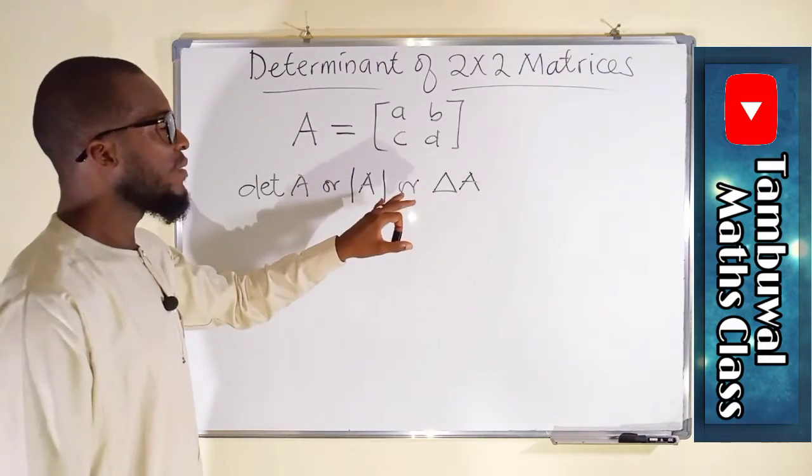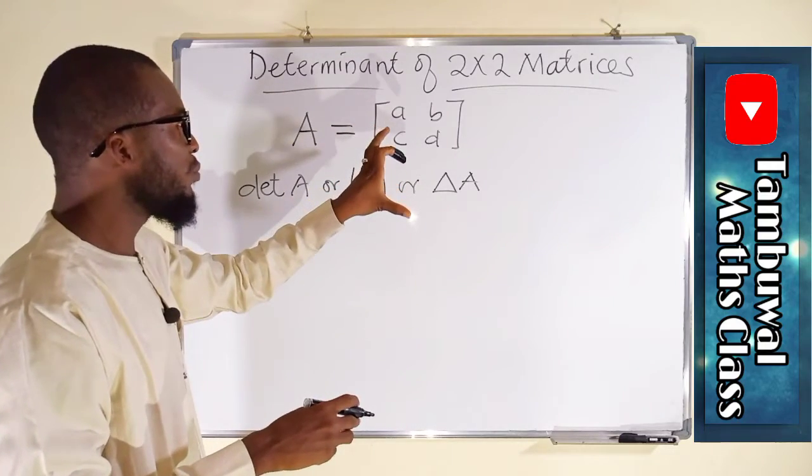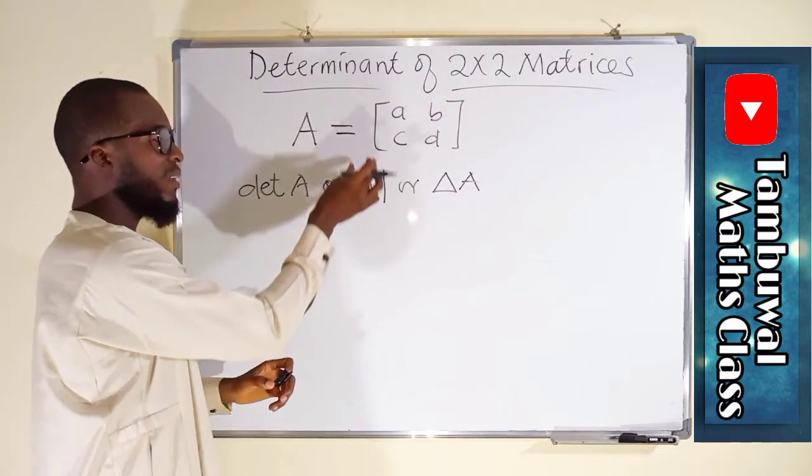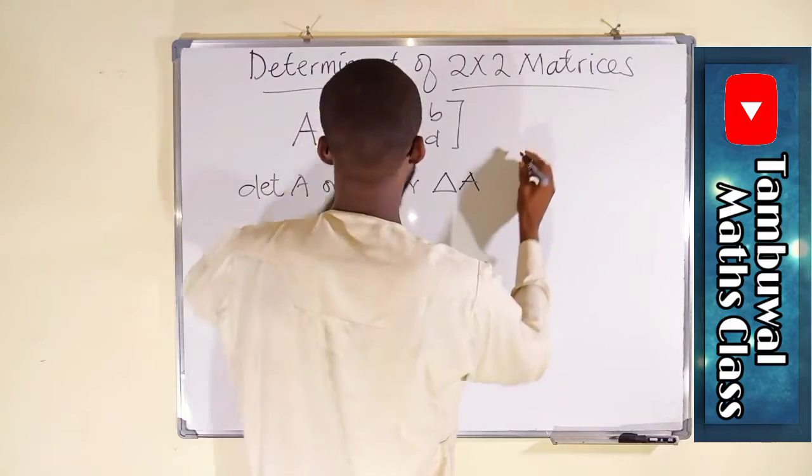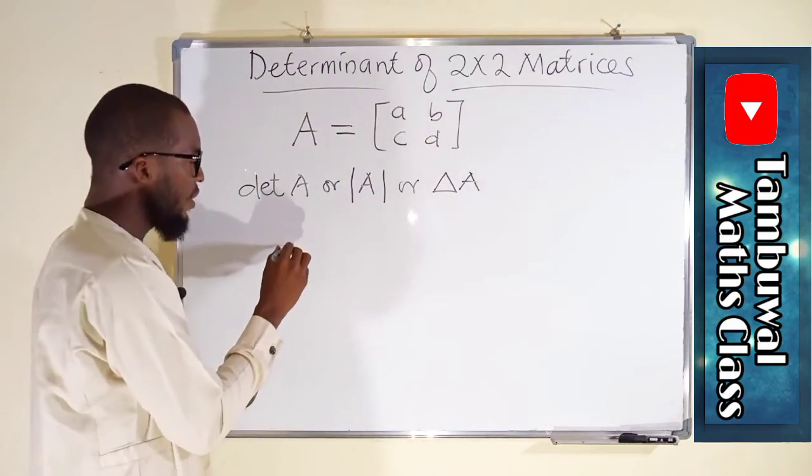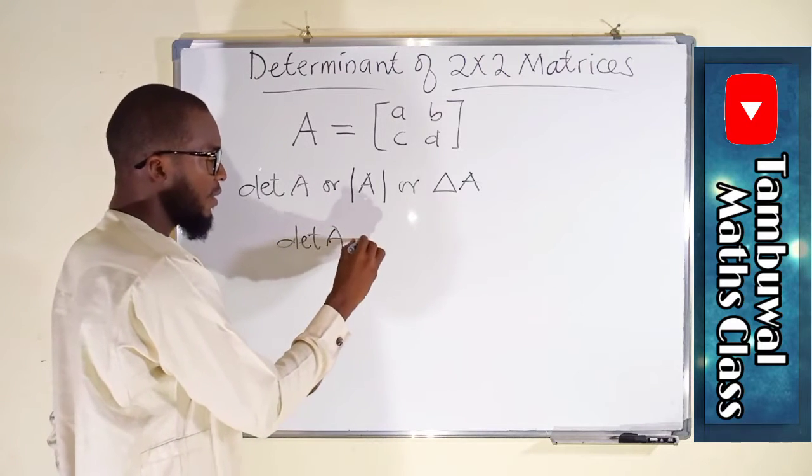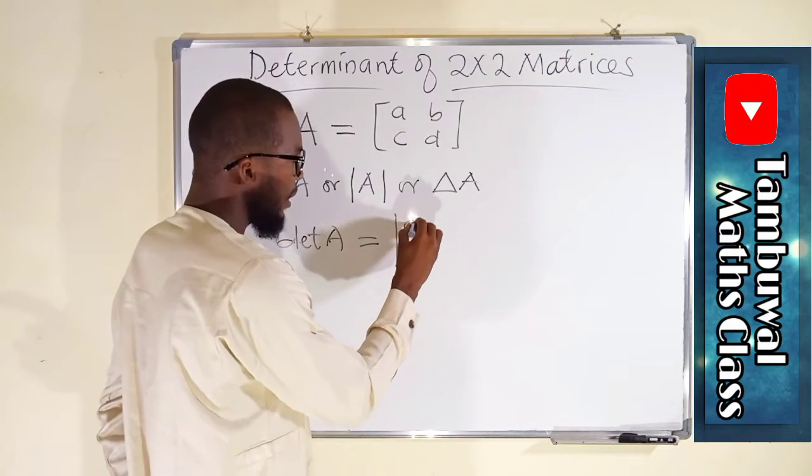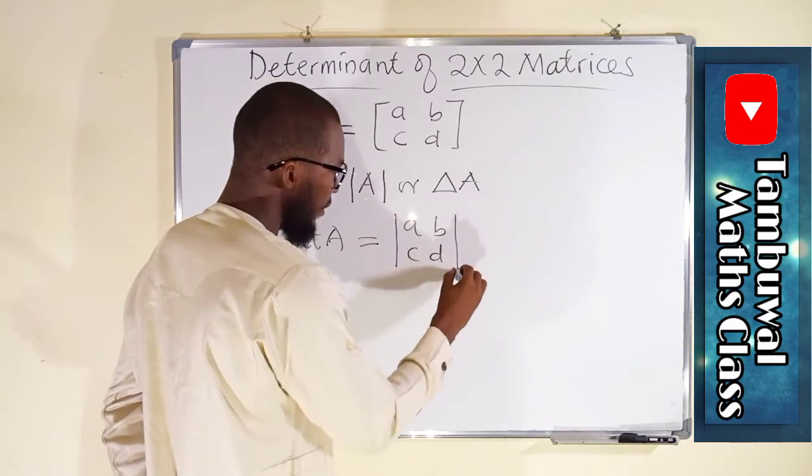While the elements that are enclosed under a bracket can also be written in this form, you can write all the elements and use these vertical bars. So for this one, if we are to find the determinant of this matrix, we can write it as det A equals, you see we have a vertical bar, a, b, c, d.